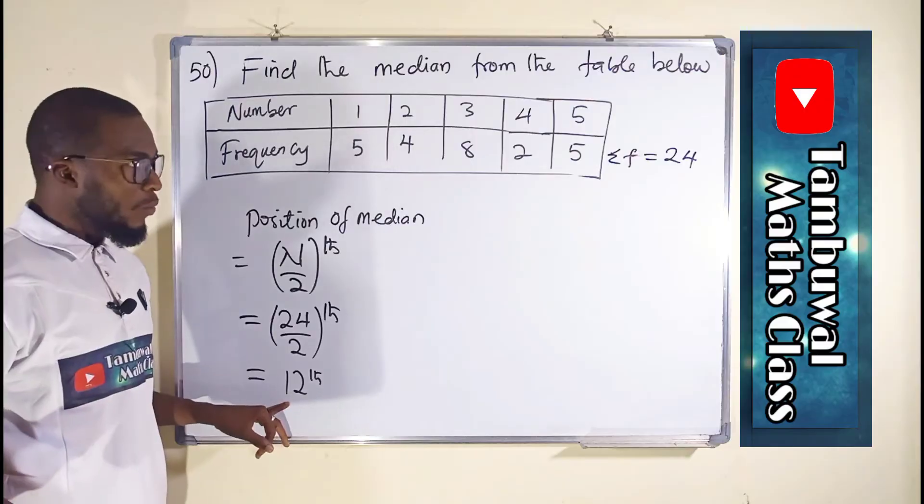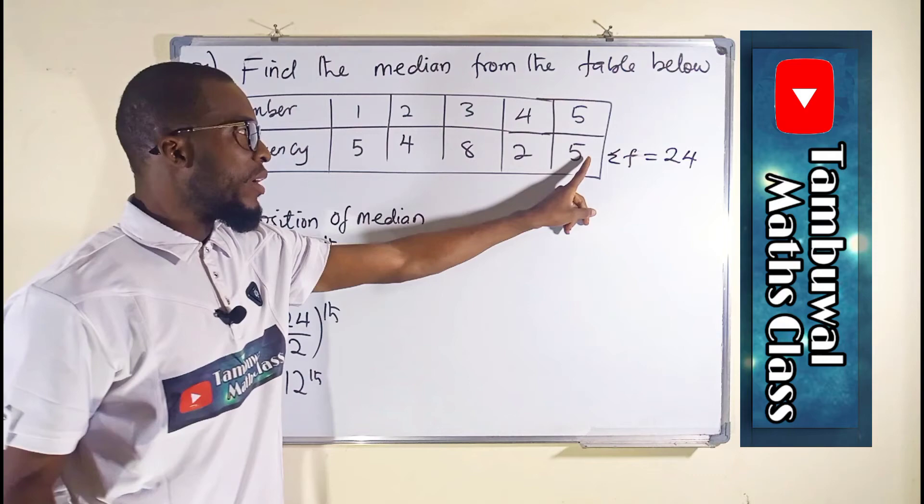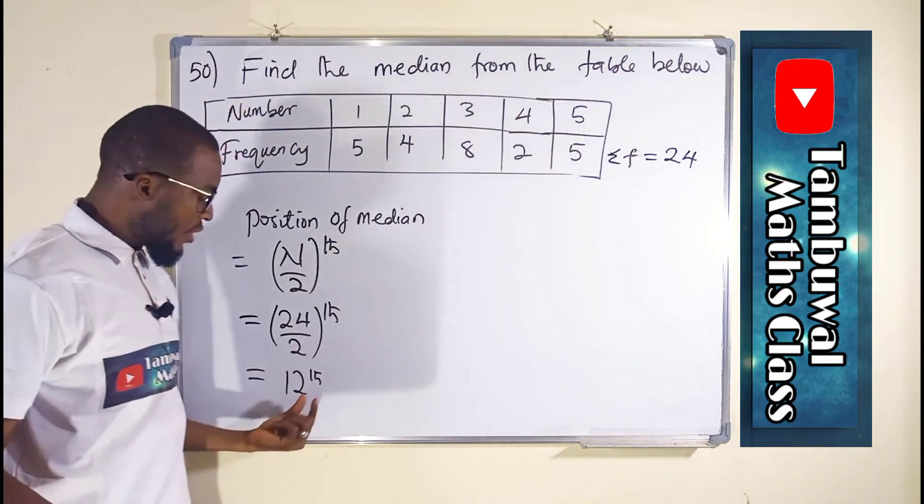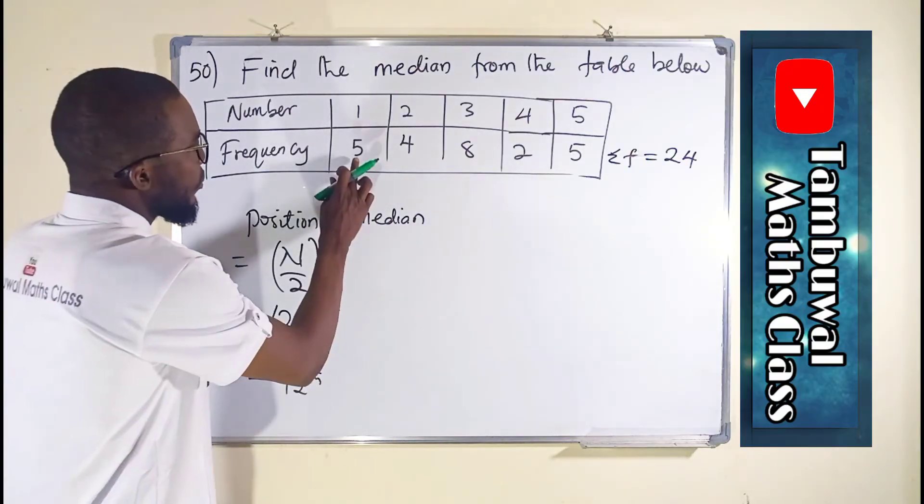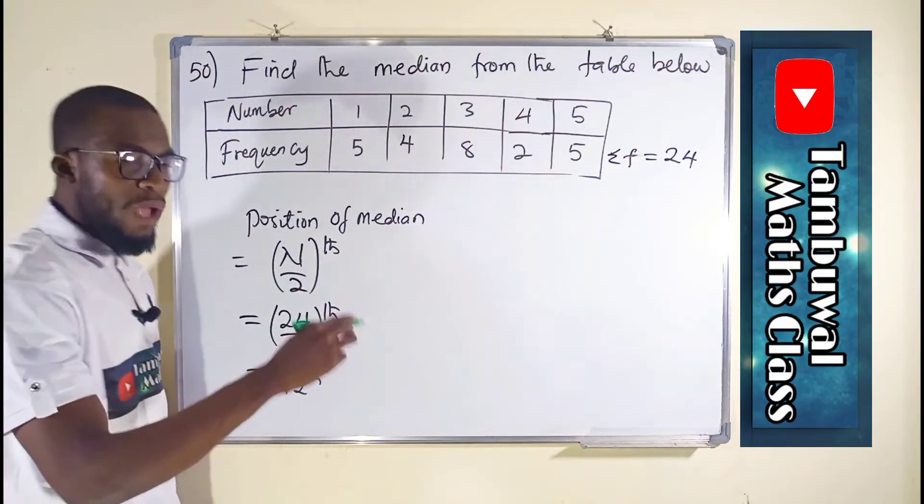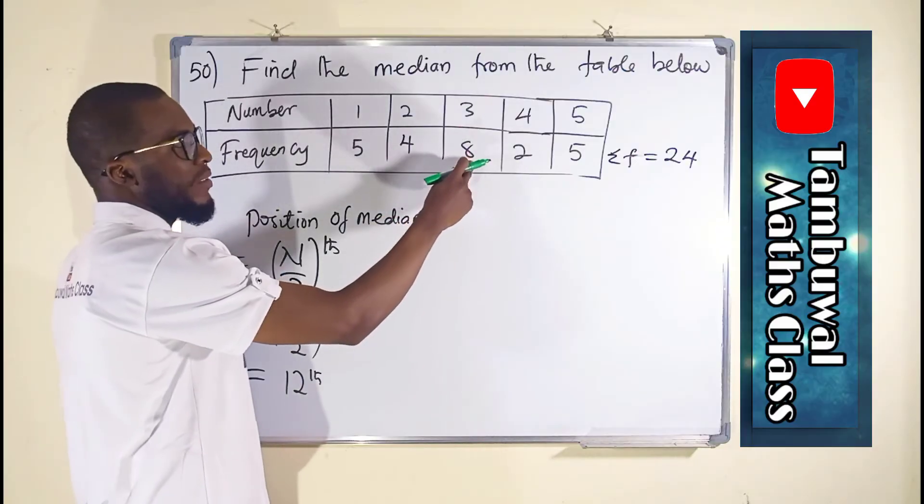So to find this 12th position, we are going to add our frequency either from the left hand side or from the right hand side. We keep adding until we reach a position where we have 12. 5 plus 4 is 9, and 9 is less than 12, therefore we have to add again. 9 plus 8 is 17, so that position is here.